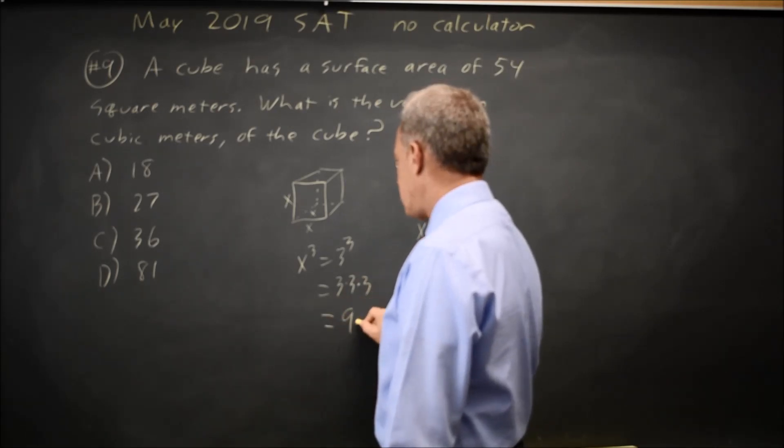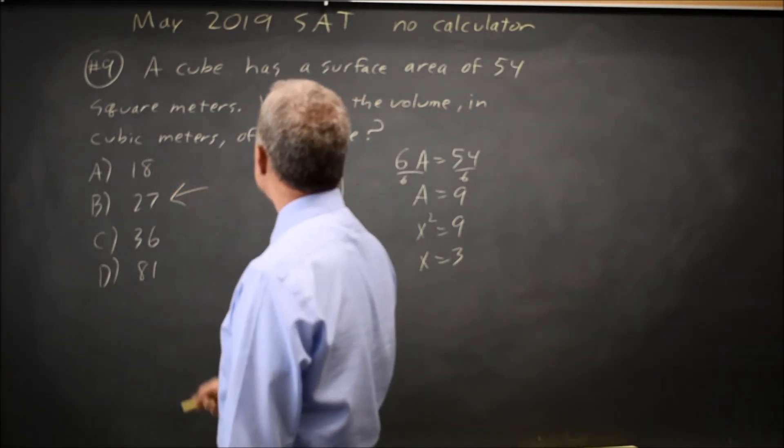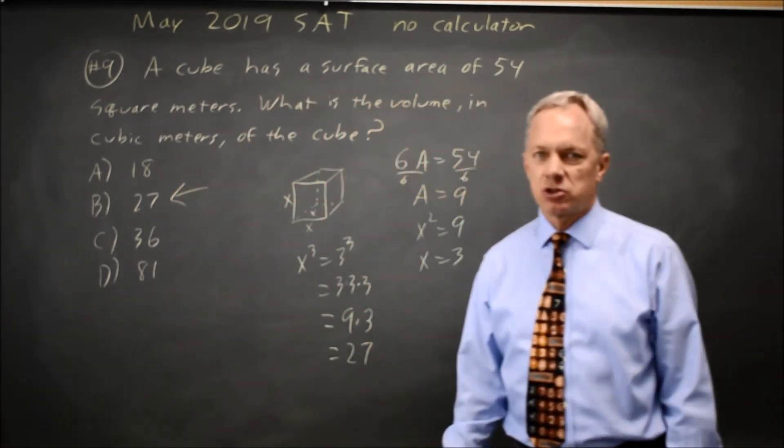3 times 3 is 9. 9 times 3 is 27. So the volume of the cube would be 27 cubic meters. That's choice B.